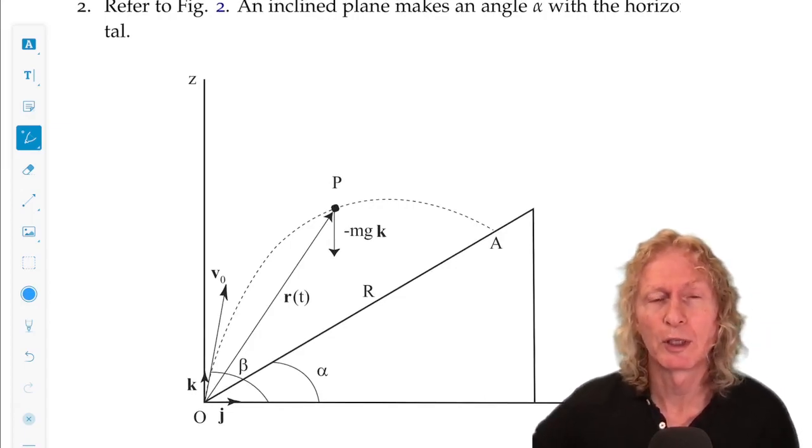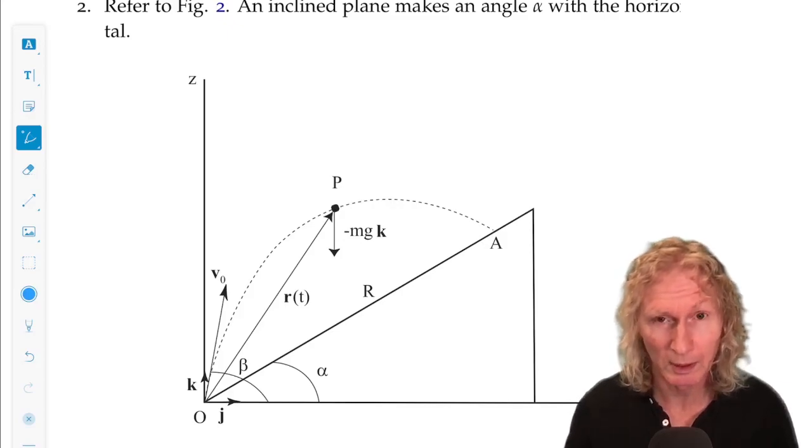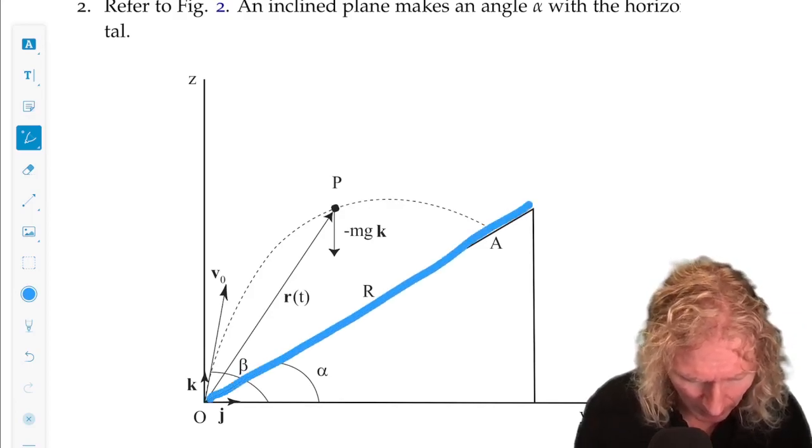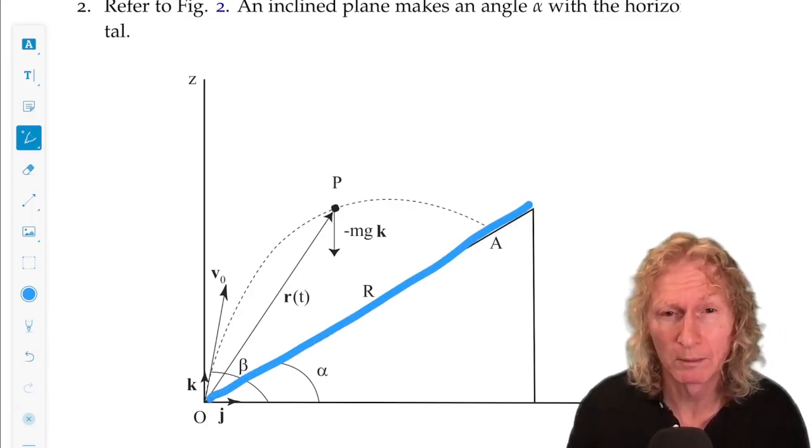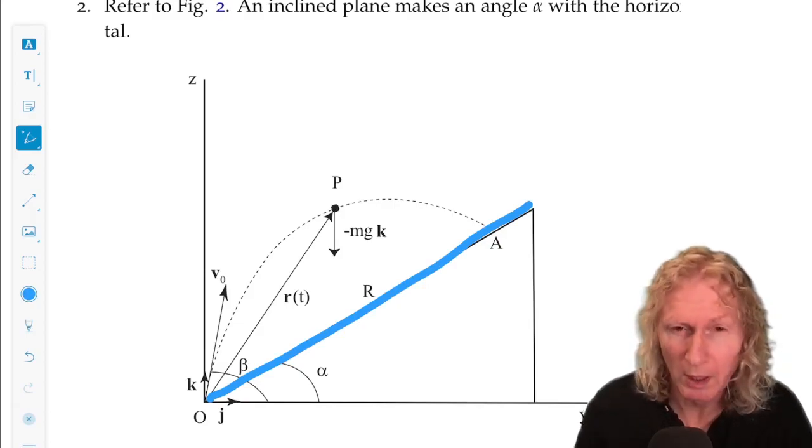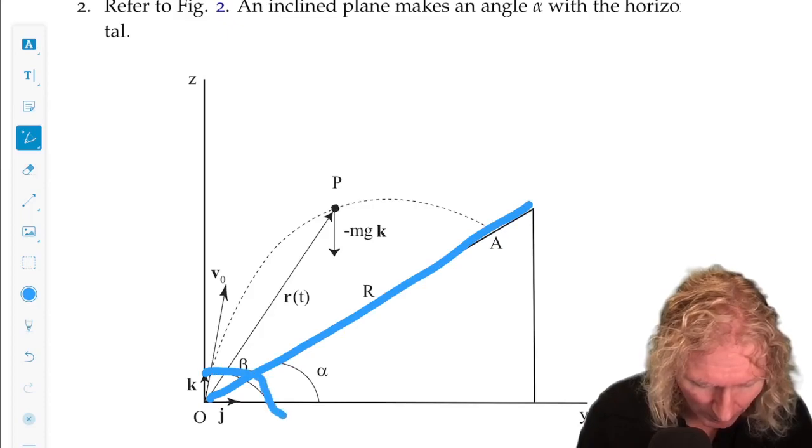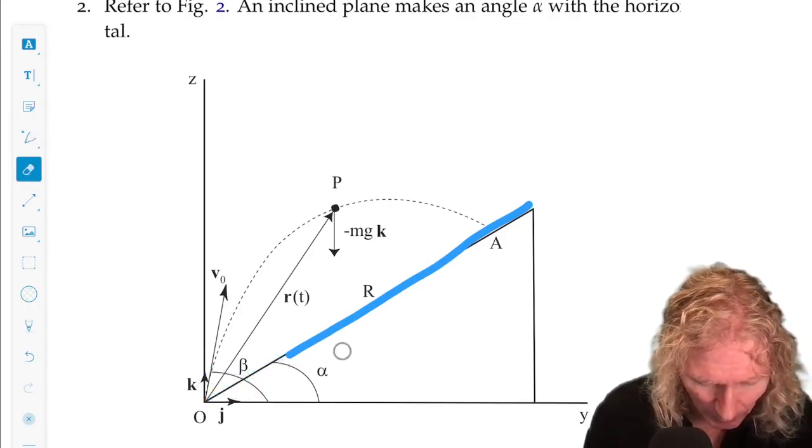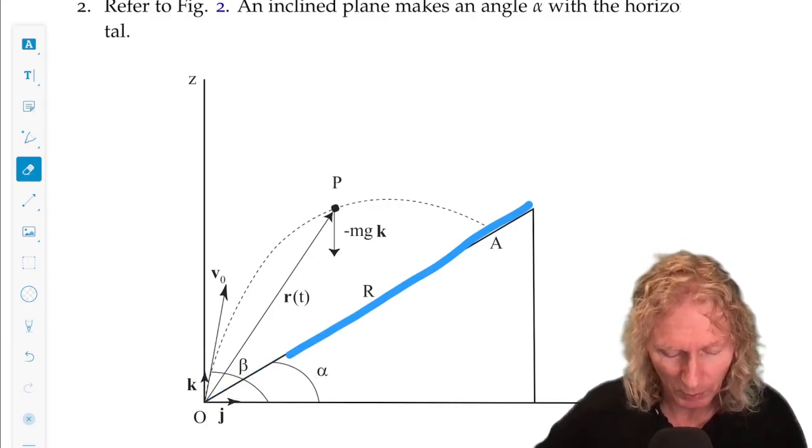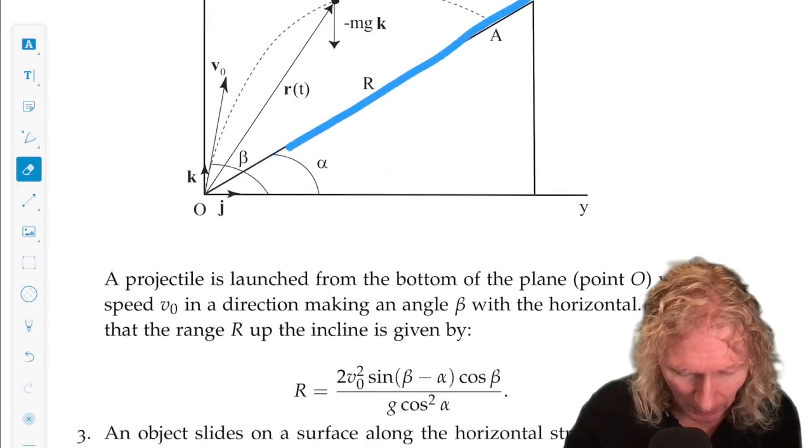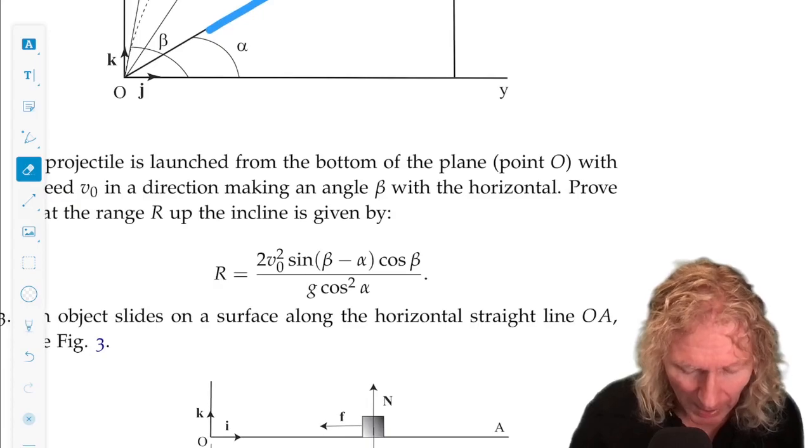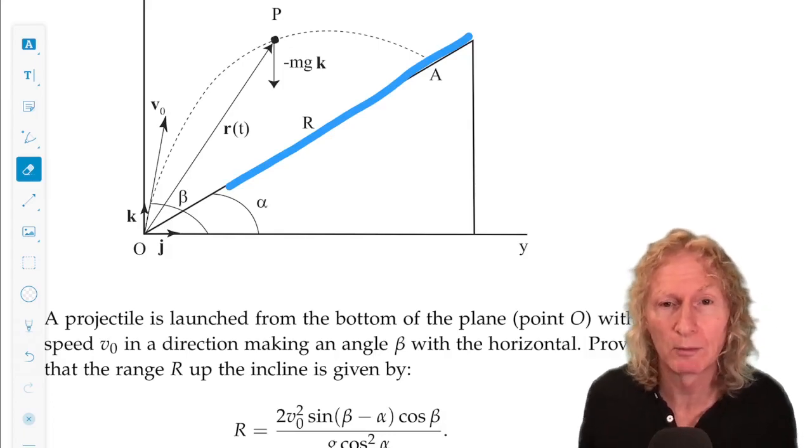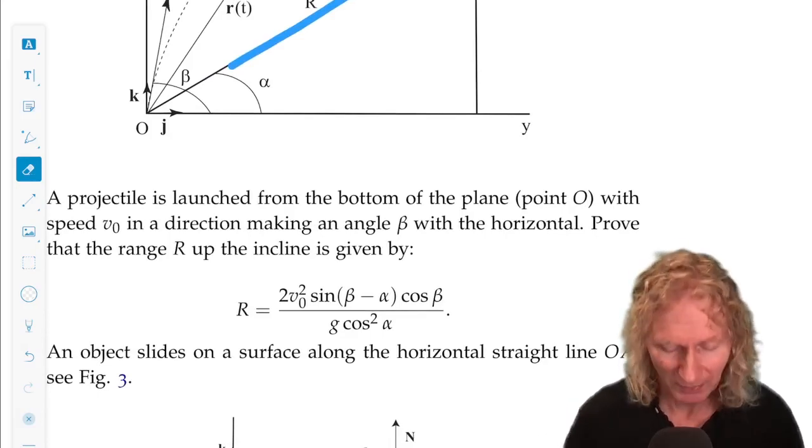This looks like the projectile problem we had in the chapter. It is, except I have given you a wrinkle by sticking an inclined plane in here, inclined with respect to angle alpha with respect to the horizontal, and we're going to launch a projectile at an angle beta with respect to the horizontal. And beta better be bigger than alpha. You can play around with beta and alpha once you get the expressions that you need. So what I want you to figure out is how far is this particle going to travel before it hits the plane, the range up the plane.